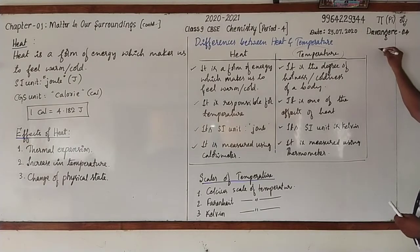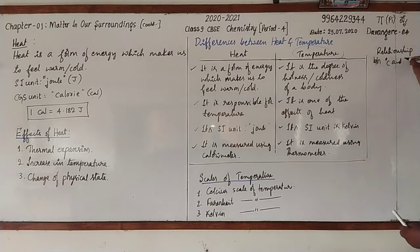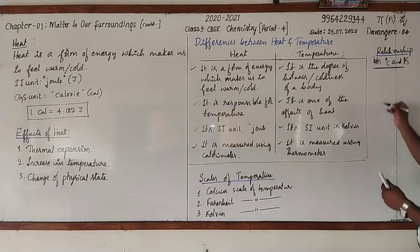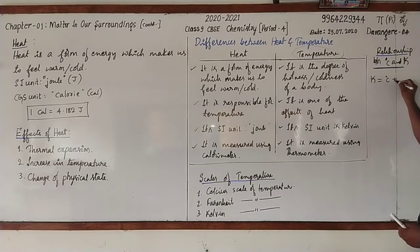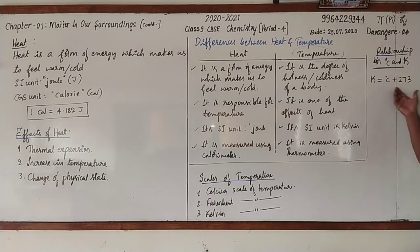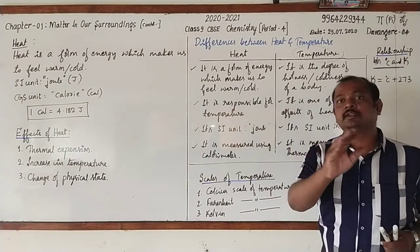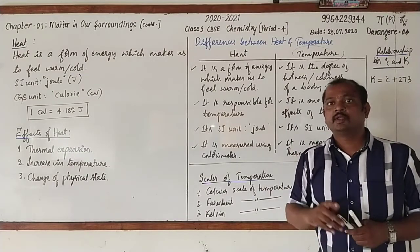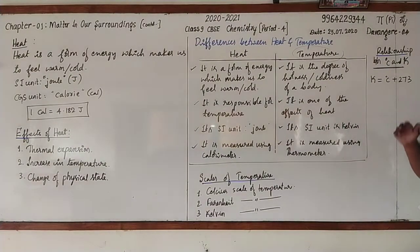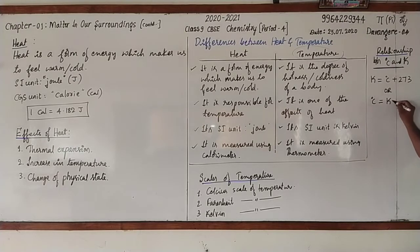The relationship between degree Celsius and Kelvin is: K = C + 273. To convert from degree Celsius to Kelvin, use this formula. For example, if the temperature is 10 degrees Celsius, then K = 10 + 273 = 283 Kelvin. This can also be written as: degree Celsius = K − 273.